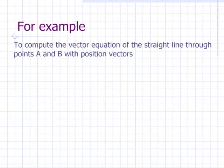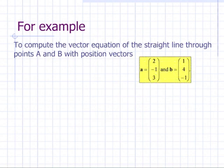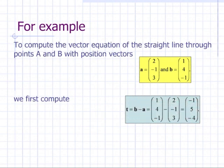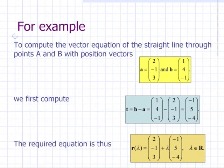For example, to compute the vector equation of the straight line through points A and B with position vectors A equal (2, -1, 3) and B equal (1, 4, -1), we first compute the direction vector T equal to B minus A, which is equal to (-1, 5, -4). The required equation is then R(lambda) = (2, -1, 3) plus lambda times (-1, 5, -4), where lambda is a real parameter. As lambda varies we move along the line.